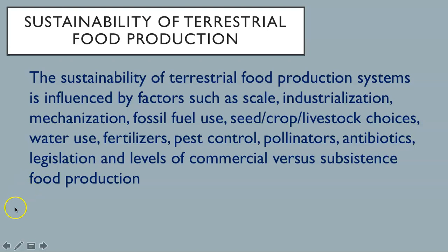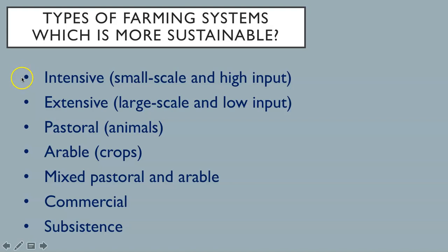Different types of farming systems include intensive farming — small-scale and high-input. These practices include growing high-input crops using fertilizers and pesticides and keeping animals indoors. Food production increases, but there are unwelcome side effects. Extensive, large-scale, or low-input agriculture uses small inputs of labor, fertilizers, and capital relative to the area of land being farmed. Nomadic herding is an example of extreme extensive farming, where herders move their animals to use feed from occasional rainfalls. Pastoral farming is that of animals, while arable farming is that of crops.